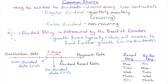Holders of common shares may be entitled to dividends — I stress 'may' because they're discretionary and non-contractual. Contrast that with interest payments on a bond, where the company has no discretion: those payments must be made. They are contractual. Not so with dividends.